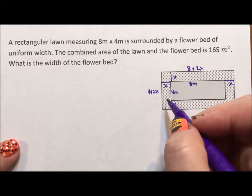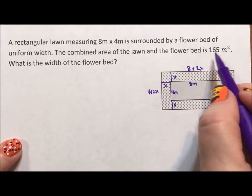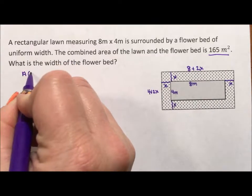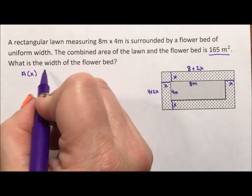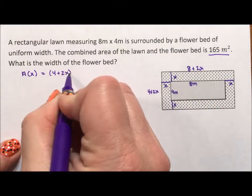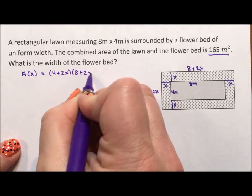So it says that if we're looking for this measurement and we have the area, we need a formula for area. So I'm going to say the area in terms of x is going to be, you know, length times width, 4 plus 2x times 8 plus 2x.